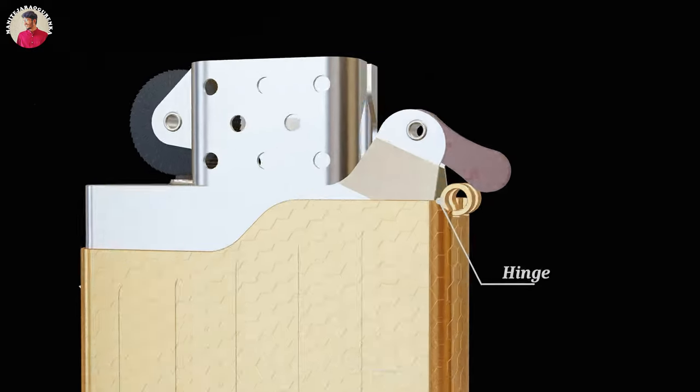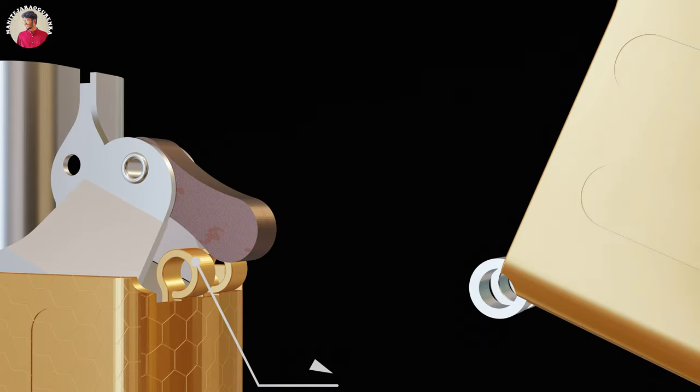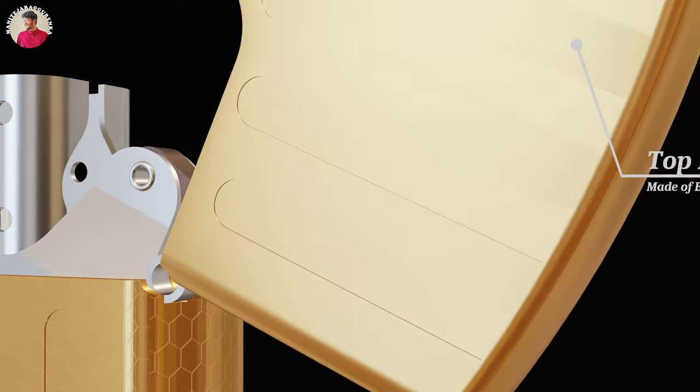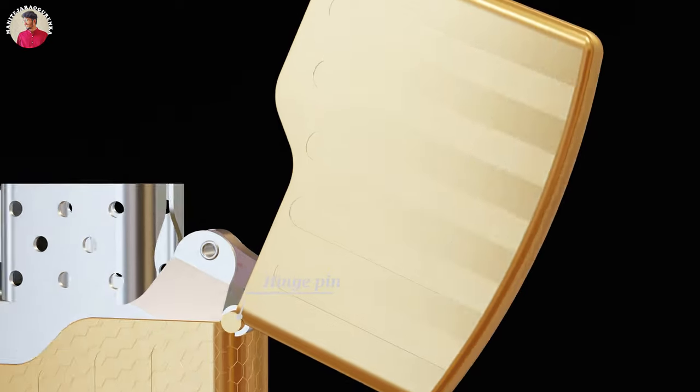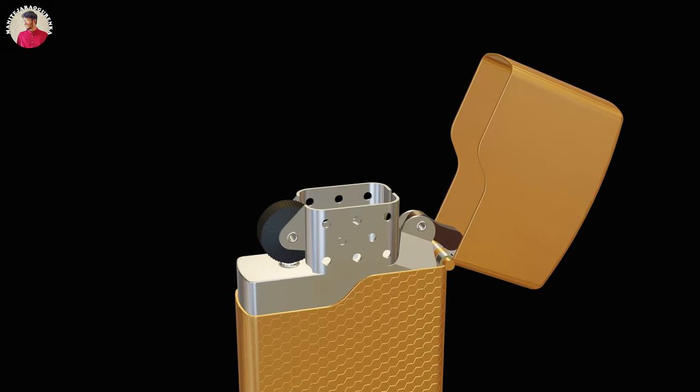The bottom case consists of the hinge, where it gets fixed with a top lid made of brass with the help of the hinge pin, which interlocks the upper lid and bottom case.